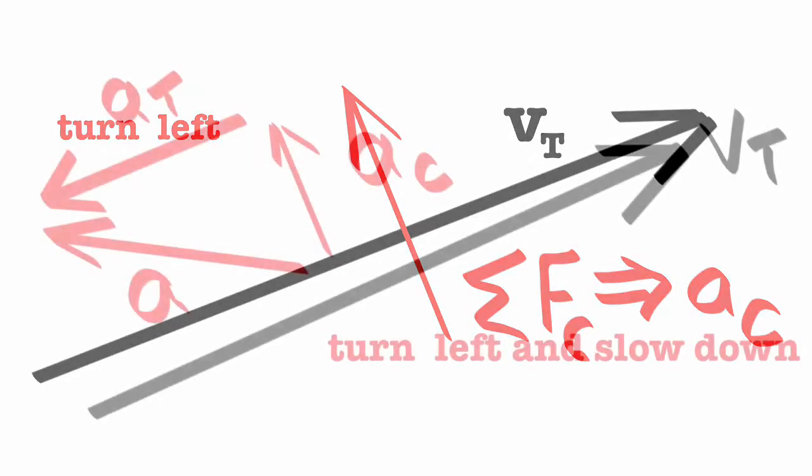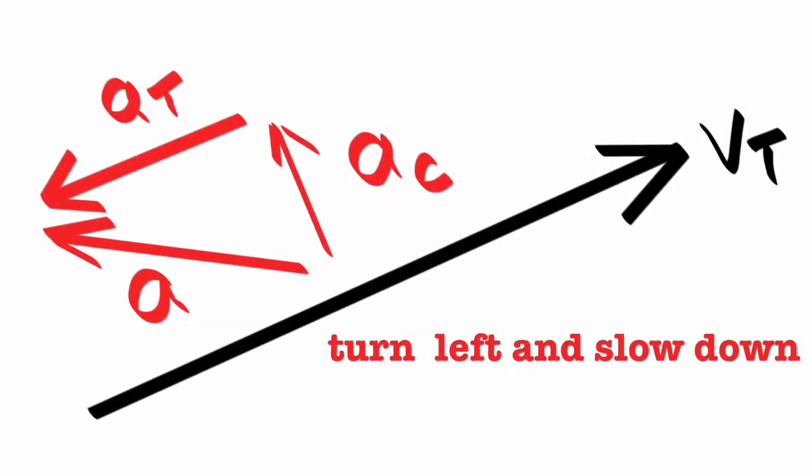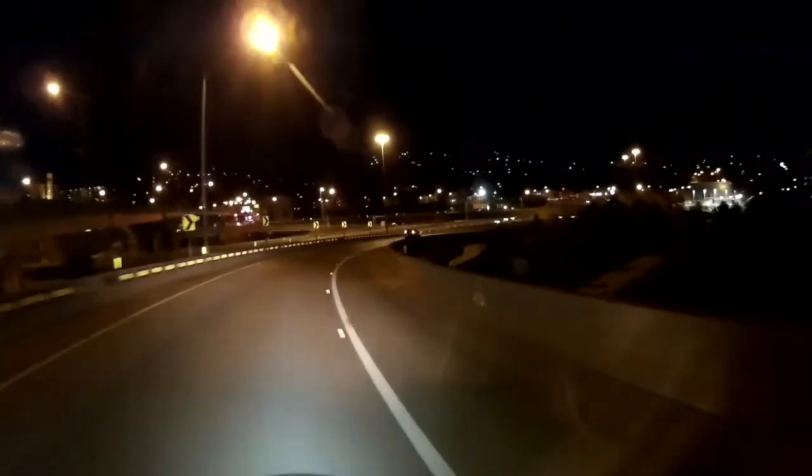Now if you're going to do something crazy like turn left and slow down, you have tangential net force and centripetal net force causing two separate accelerations which combine into one. Here: slowing down and turning right. Still turning right, now speeding up a little bit.